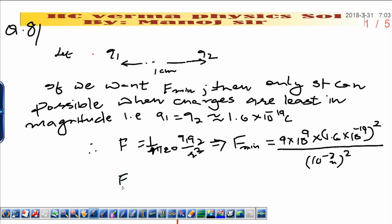And finally here we will get minimum force. So, 9 × 1.6 × 1.6 × 10^-38 plus 9, and divided by 10^-4.